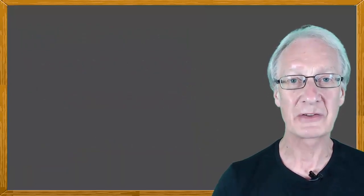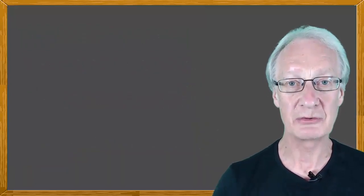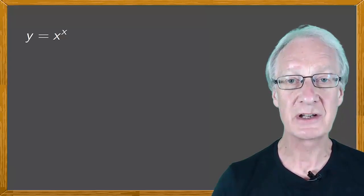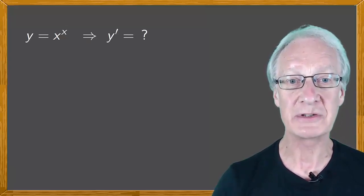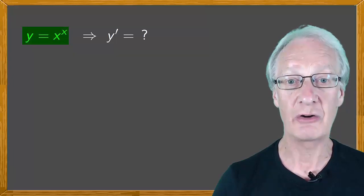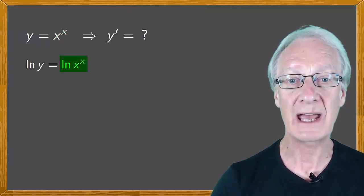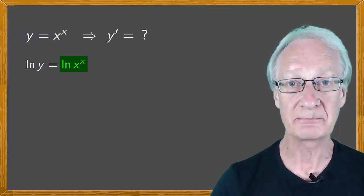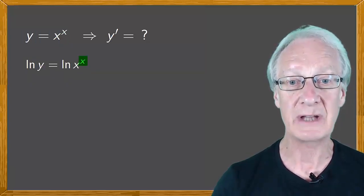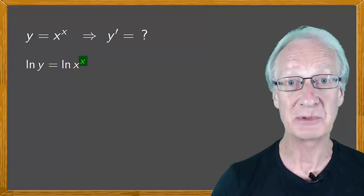Let's say, for example, that we want to calculate the derivative of x to the power of x. The first thing we do is to take the natural log of both sides of the equality. And now we have the log of a power. So the exponent x goes out by multiplying.